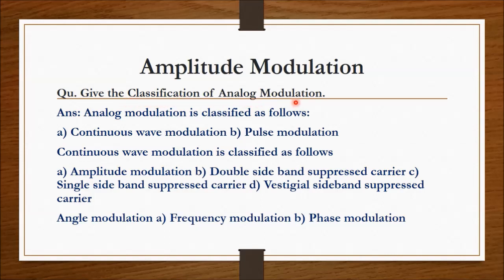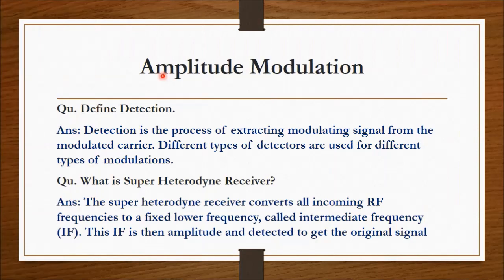The next question: give the classification of analog modulation. Analog modulation is classified as continuous wave modulation and pulse modulation. Continuous wave modulation is further classified as: amplitude modulation, double sideband suppressed carrier, single sideband suppressed carrier, vestigial sideband suppressed carrier, and in angle modulation there is frequency modulation and phase modulation.